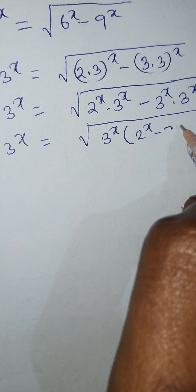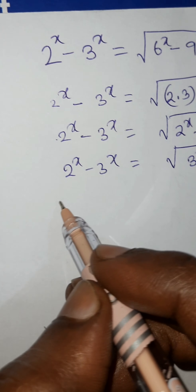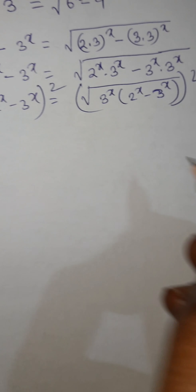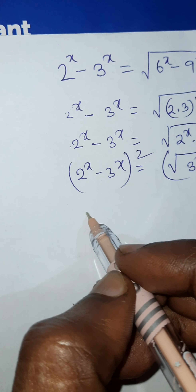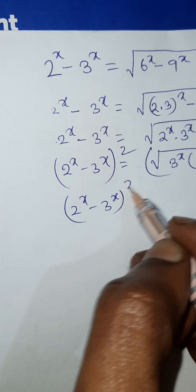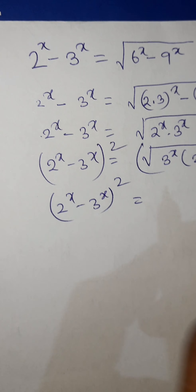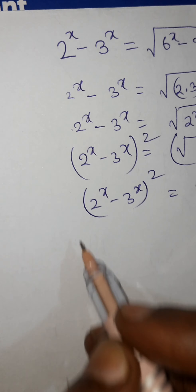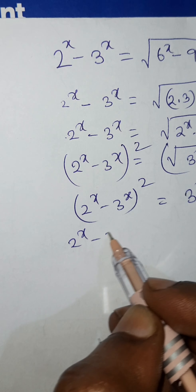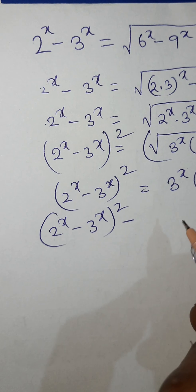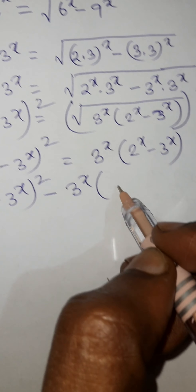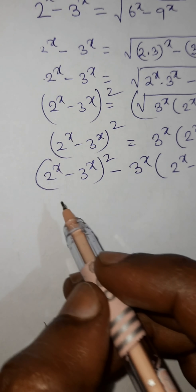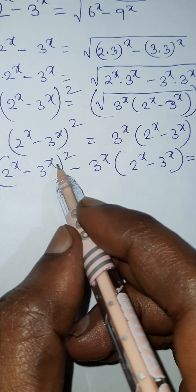So 2 to the power x minus 3 to the power x equals the square root of 3 to the power x times (2 to the power x minus 3 to the power x). Squaring both sides, we get (2 to the power x minus 3 to the power x) squared is equal to 3 to the power x times (2 to the power x minus 3 to the power x).